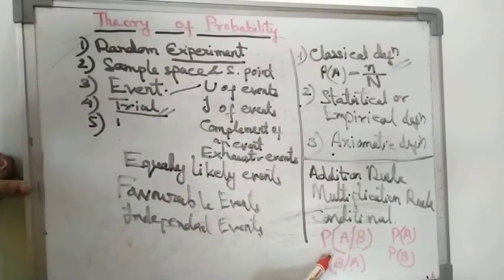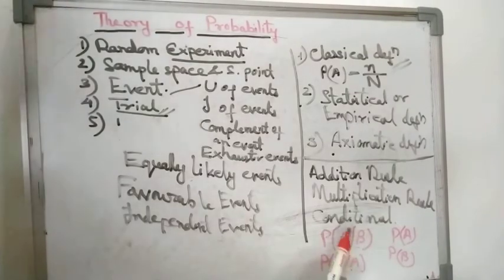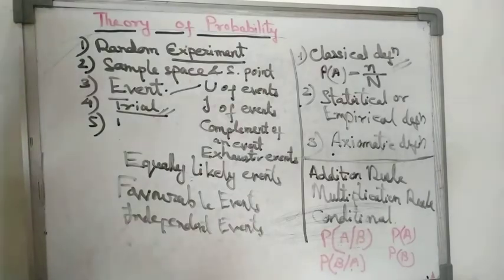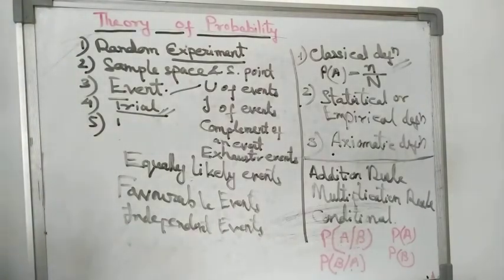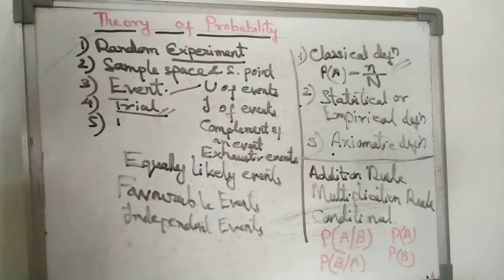When we find probability in the conditional way, it is called conditional probability. The formula for this will be studied afterward. We will start with the random experiment, which will be covered in the next video. Thank you.